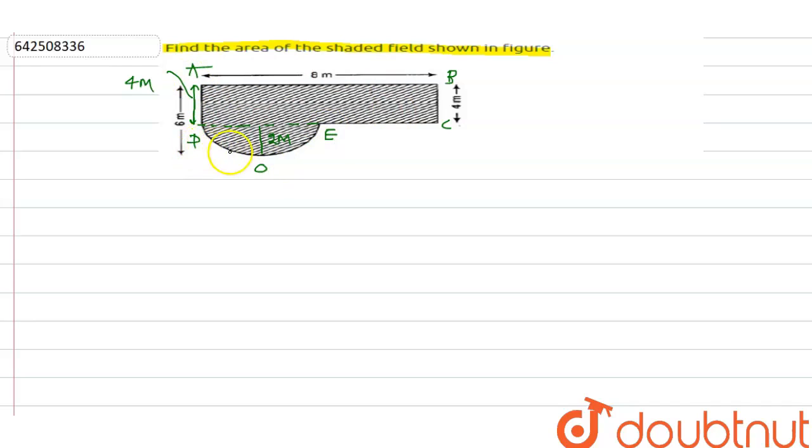region is equal to the area of rectangle, which means 8 into 4, plus pi r square by 2. So pi r square - r is 2, so r square is 4, and this is